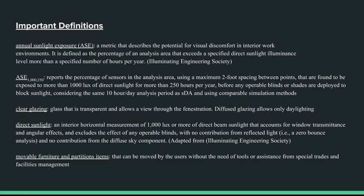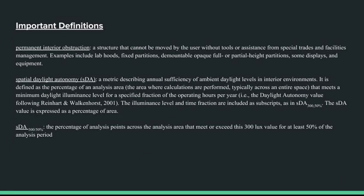On the screen are some important definitions. We will not read through all of them — please feel free to pause the video and look through them. Two important definitions are annual sunlight exposure, a metric that describes the potential for visual discomfort in interior work environments — basically it measures how bright an area will be for a certain number of hours in a year — and spatial daylight autonomy, a metric describing annual sufficiency of ambient daylight levels in interior environments, which basically measures the area that has access to usable sunlight throughout the day.